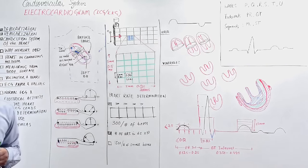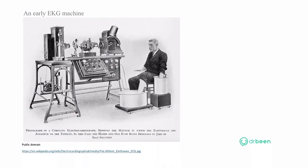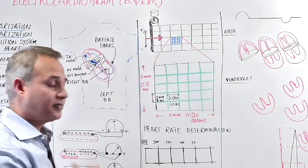Here is a diagram of an early EKG machine. This big machine is the ancient ECG machine. The person sitting there has his arms and left leg in a conducting solution, which conducts the electrical activity to the ECG machine. The ECG is recorded on a rotating paper roll. From that era, we have now progressed to doing ECG with an iPhone.